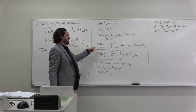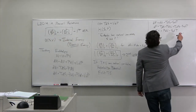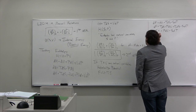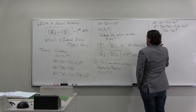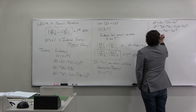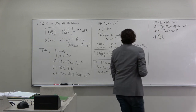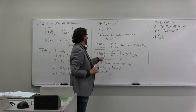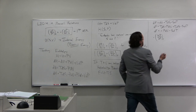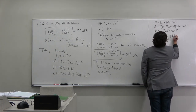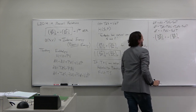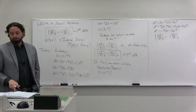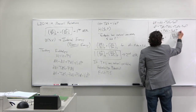Applying our compatibility condition to dF equals minus P dV minus S dT, and noting there are two minus signs that cancel, the third Maxwell relation is: partial P partial T at constant V equals partial S partial V at constant T.